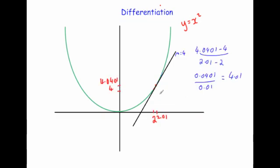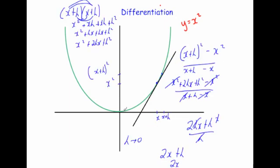Going back to the previous example where the x value was equal to 2: 2 times x equals the gradient of the tangent, so 2 times 2 is 4 — and that was the gradient of the tangent. If I wanted the gradient at the point where x equals zero, 2 times zero is zero, and the gradient of that tangent is zero. At x equals minus 1, the gradient would be 2 times minus 1, which is minus 2. At x equals 5, the gradient would be 2 times 5, which equals 10.